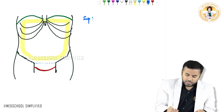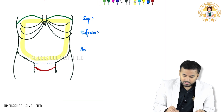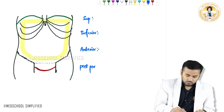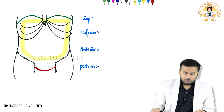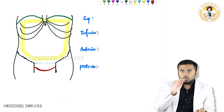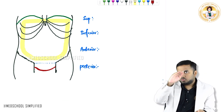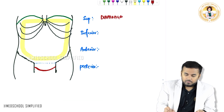First of all, you can look at the superior border, you can look at the inferior border, the anterior border, and you can also see the posterior border. When it comes to the superior border, on the top what do you have? On the top you have got the diaphragm. So the abdominal cavity's superior border is having two halves of the diaphragm.